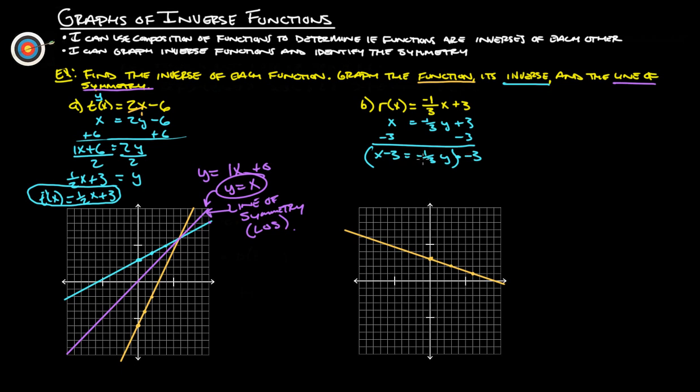So negative three times x is negative three x. Negative three times negative three is plus nine. Okay, so let's graph this thing and see what we get.